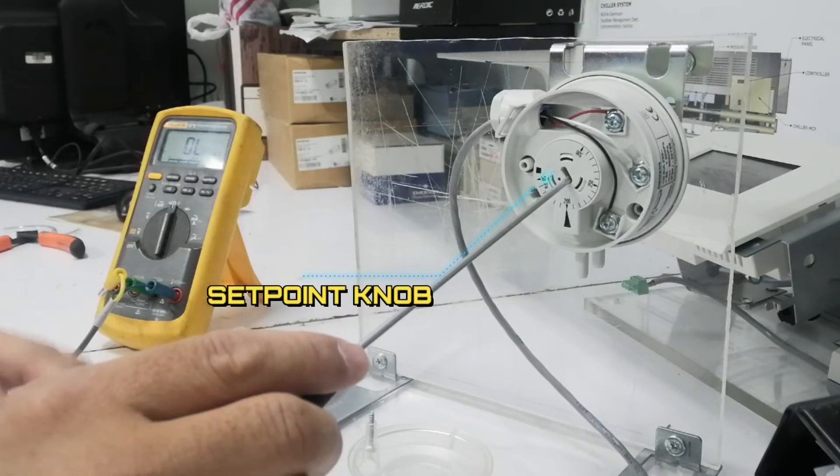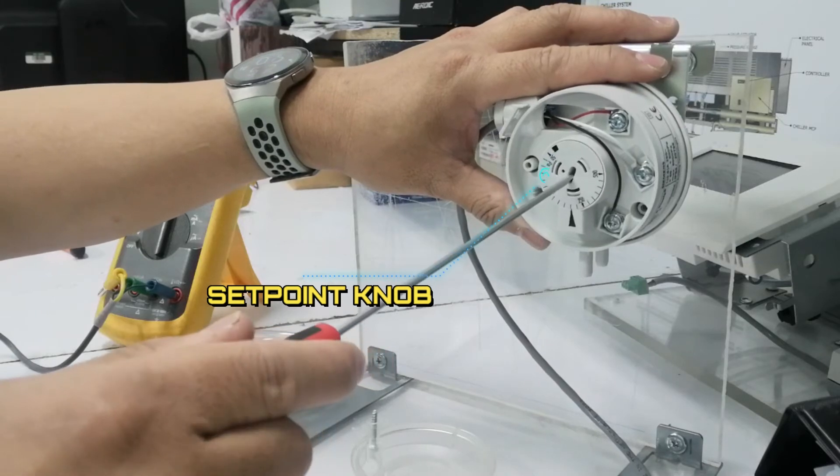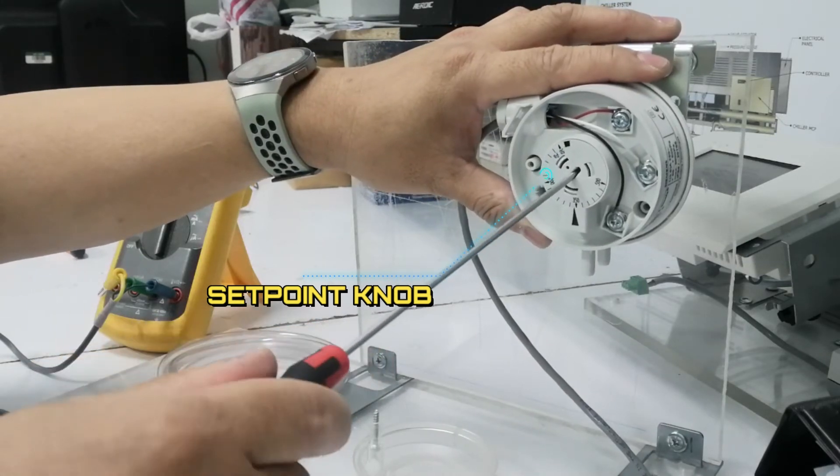This is the setpoint knob. You can adjust the desired pressure value setpoint by turning on the knob.